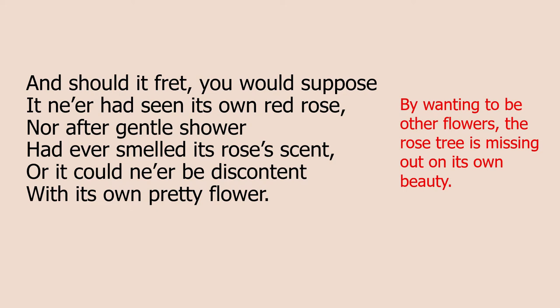In stanza two, Lamb is teaching us that by wanting to grow other flowers such as violet, lily, and mignionet, the rose tree is actually missing out on its own beauty, its own qualities. Maybe the rose tree is jealous of the violet's beautiful purple flower. Well, if you look at line two of stanza two: 'it ne'er had seen its own red rose.' Roses have their own beautiful red flower, so why is it being jealous of the purple flower? Maybe this rose tree is jealous of the lily's beautiful smell — but after a rain shower, roses smell gorgeous. In fact, it's such a lovely smell that we use it in perfumes and soap. So by looking towards other flowers, this rose tree is missing out on lots of its own really good qualities.